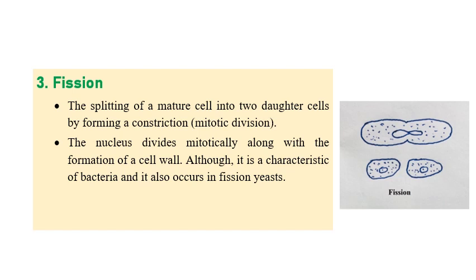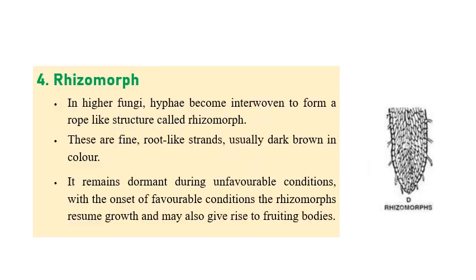The next method is fission. It is similar to budding, but in fission a dividing wall is formed in between the cells rather than a protuberance at one corner. This mechanism is also observed in bacteria, where the nucleus divides in half by mitotic division and each resulting cell behaves like a new cell.